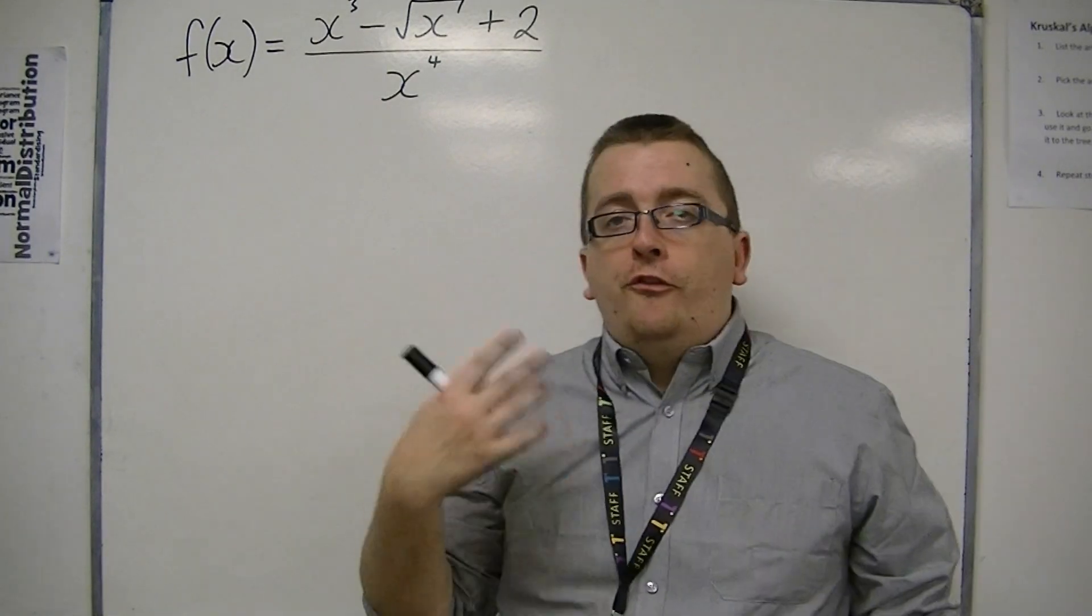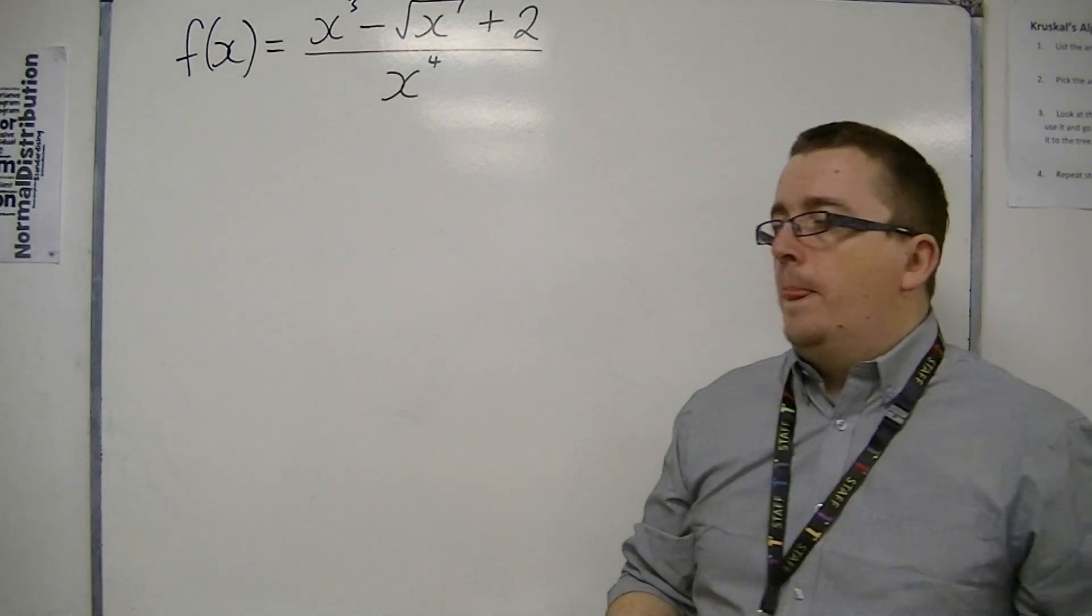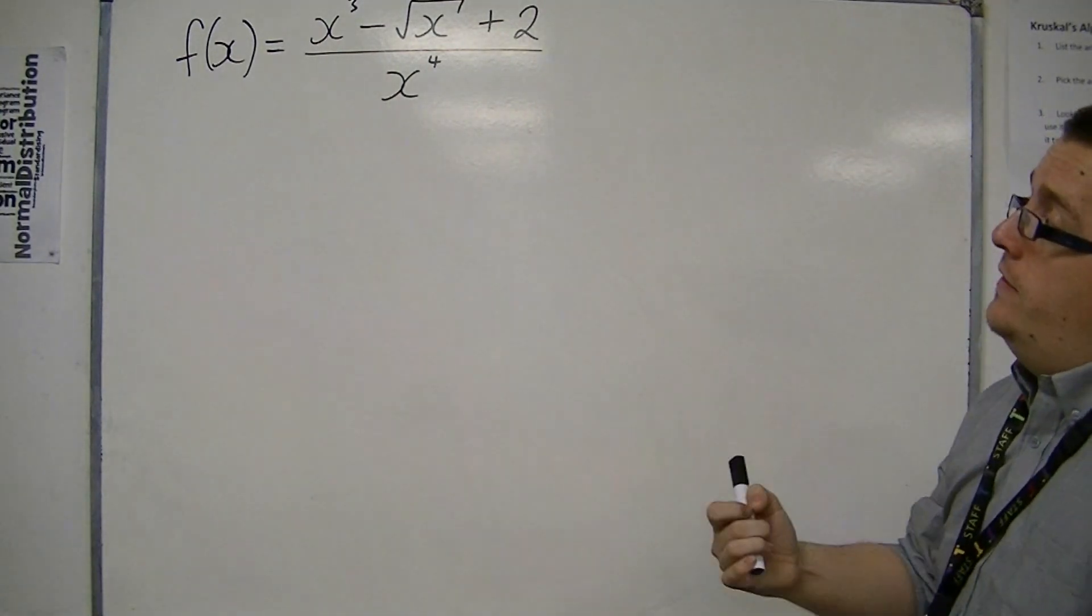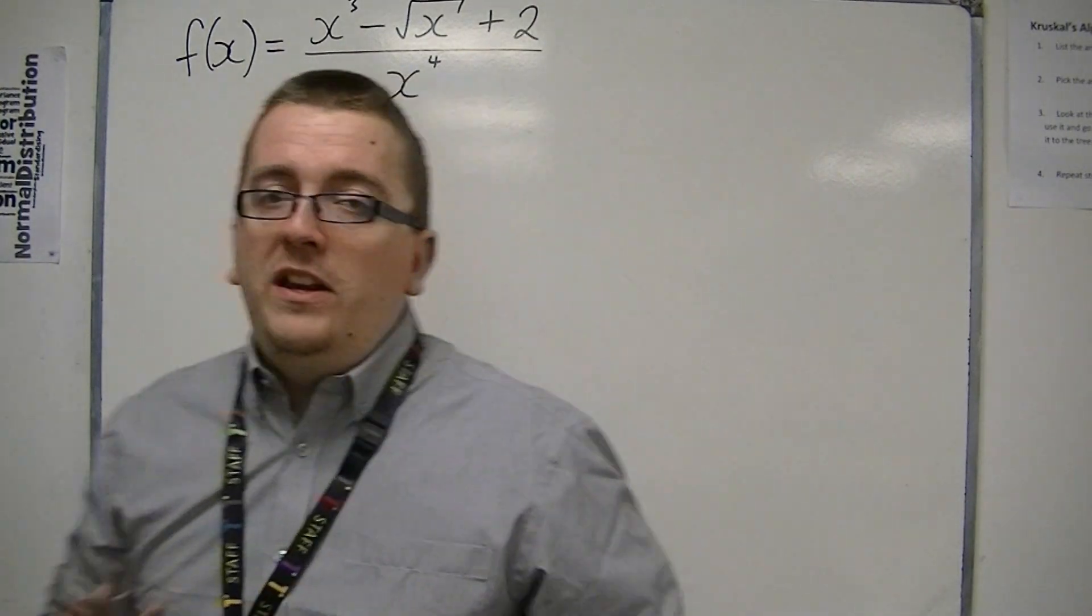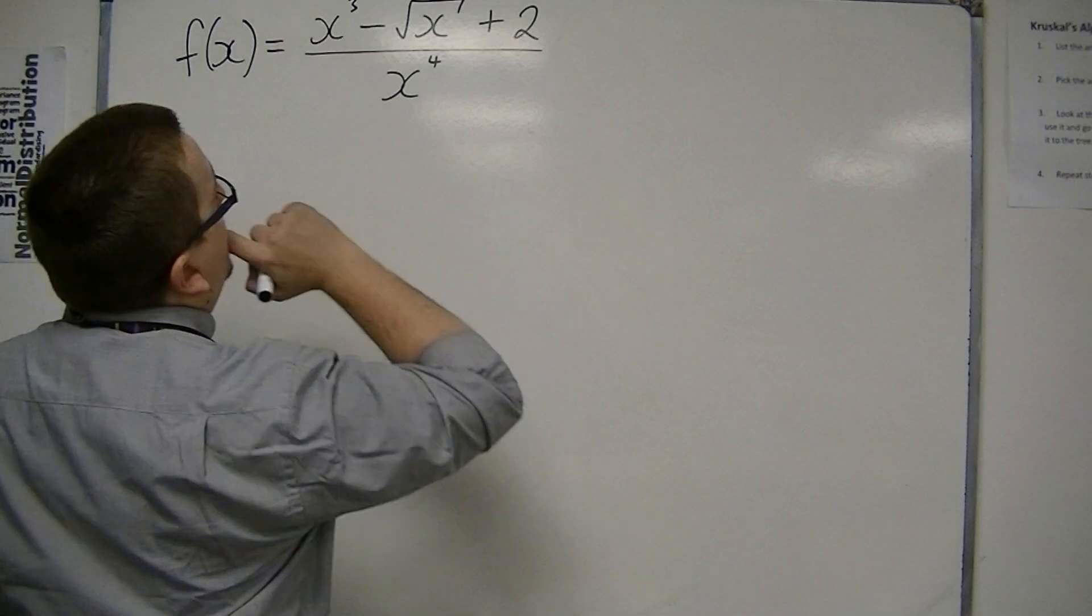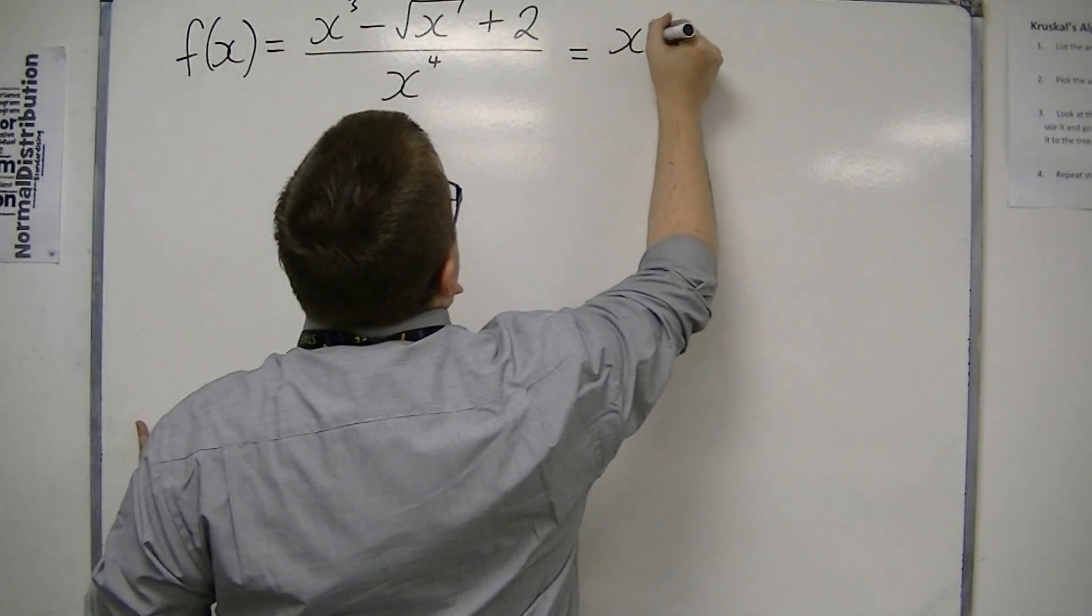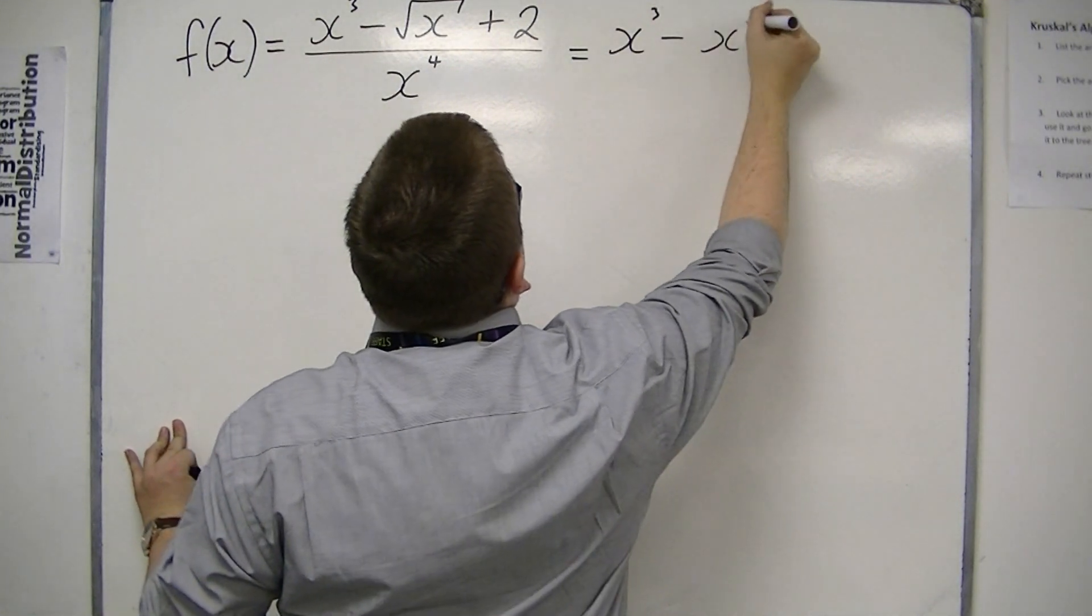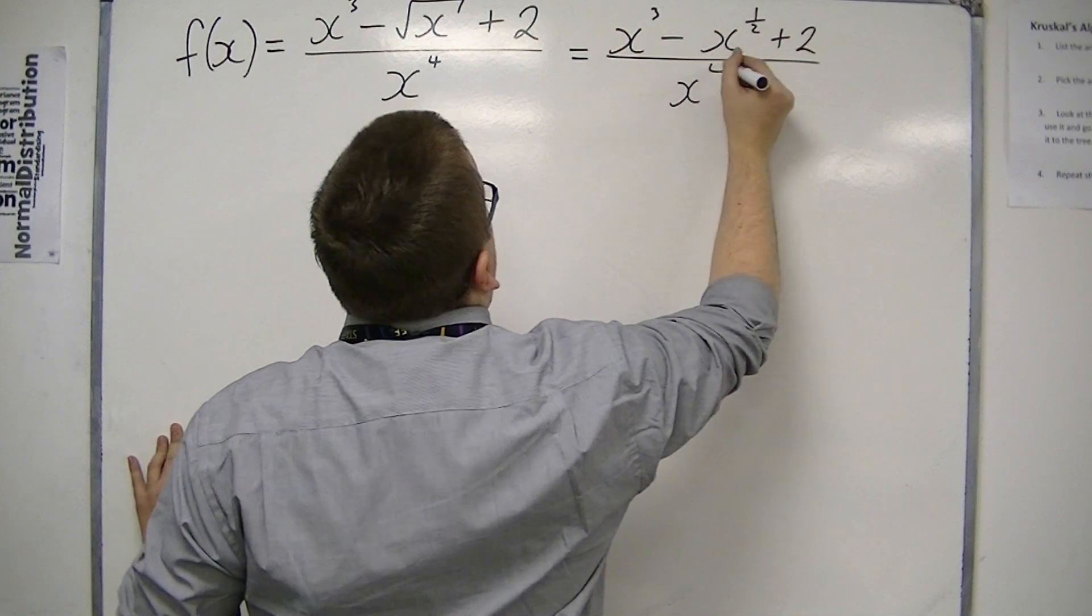And this is going to bring about both fractional and negative indices in order for us to differentiate. So we've first got to write this as a sum of powers of x. We can't do anything with it before we do that. So first of all, that's x to the half. Let's rewrite this as x cubed take away x to the half plus 2 all over x to the 4.